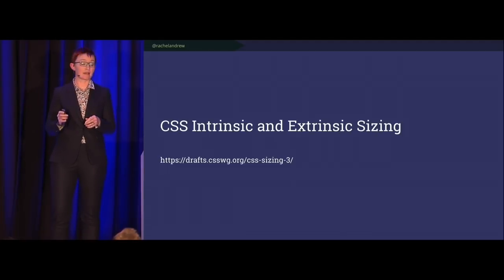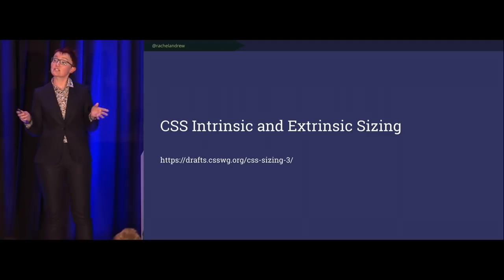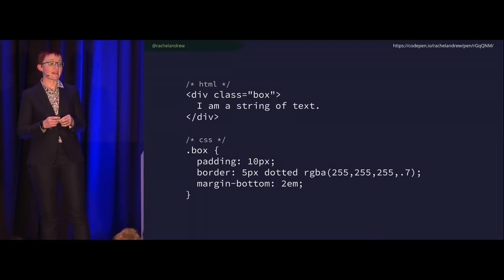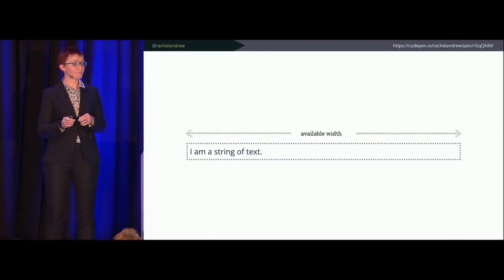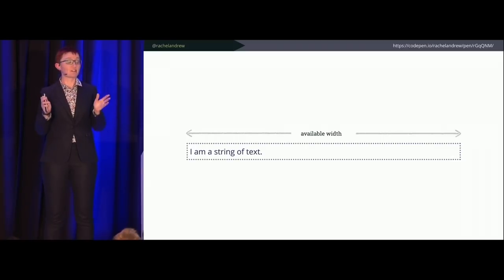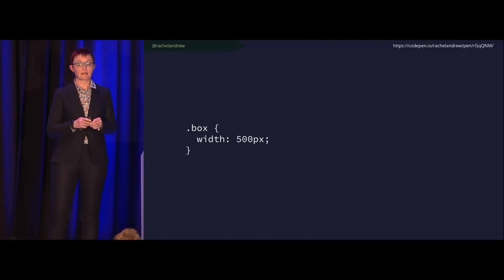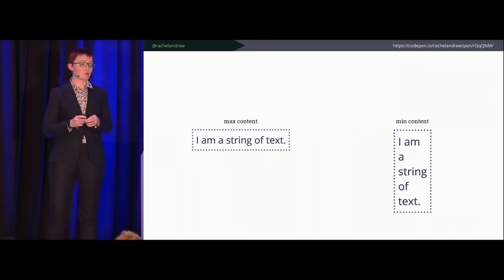The spec deals with the intrinsic size of things — the size their content would have them be if nothing outside was influencing them — and the extrinsic size — the size based on external things, like a parent element restricting size. A div is a block-level element; if you don't give it a width it stretches in the inline dimension as far as it can. An external thing causes the box to be a certain size. Or I could say I want it to be 500 pixels, and that makes it 500 pixels in the inline direction.